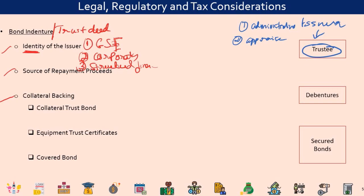For government-sponsored entities, the central government finance division is responsible for managing the national budget, and through its executive arm it issues bonds and raises money to meet its budgetary requirements.